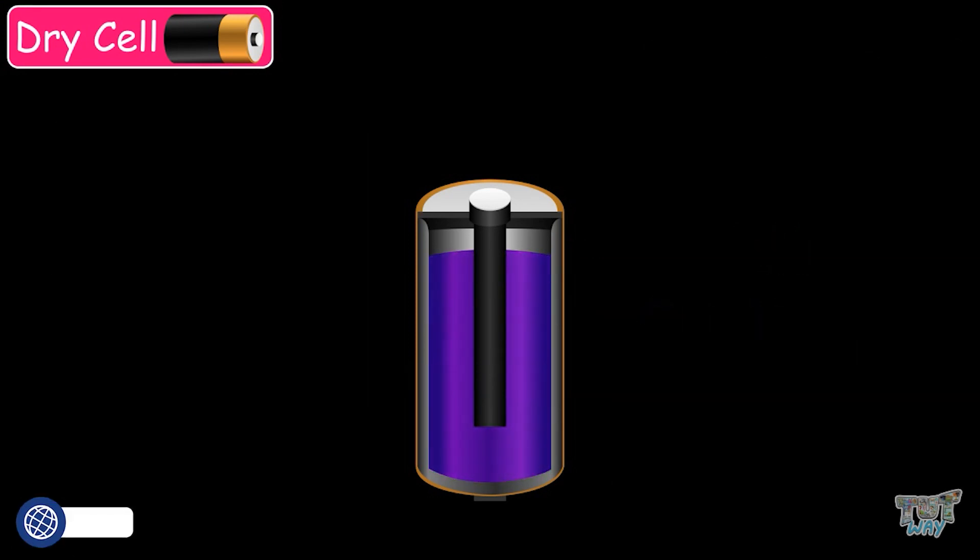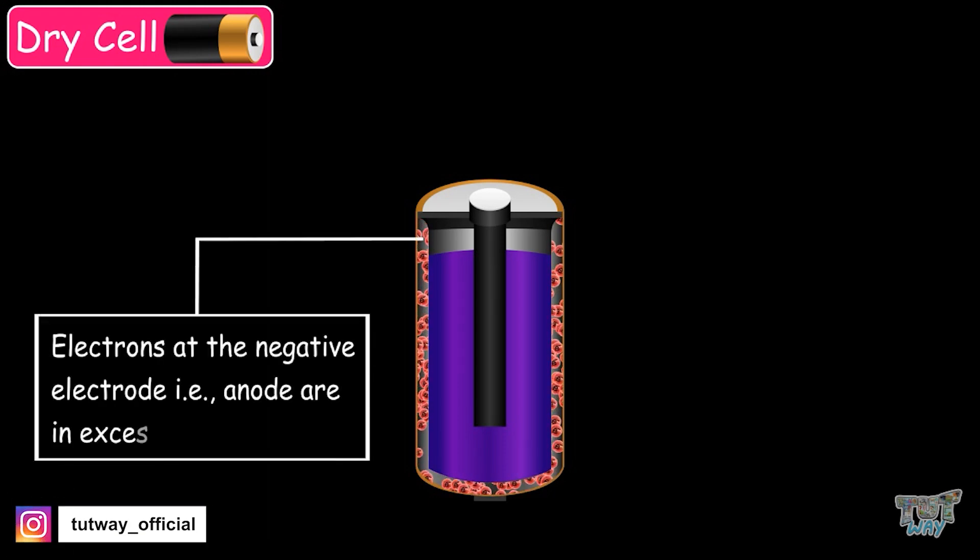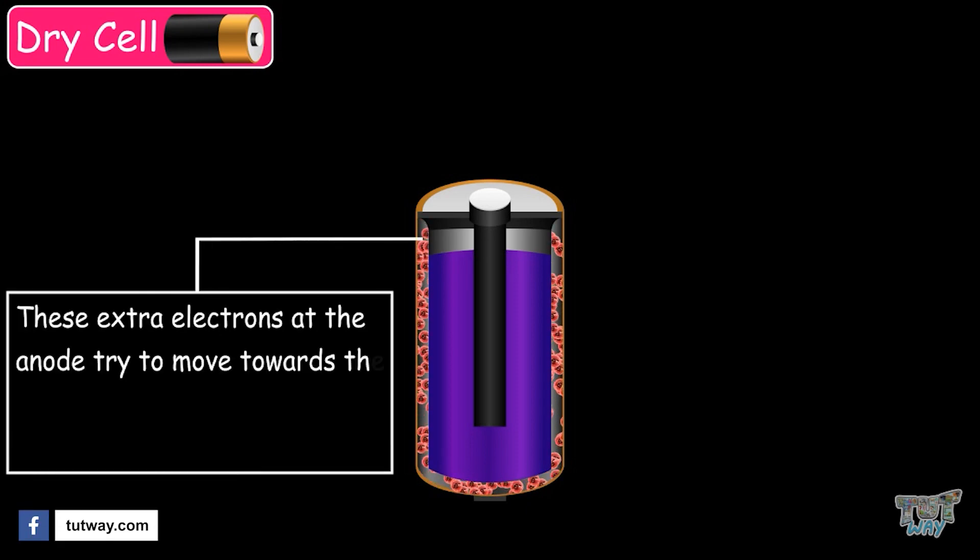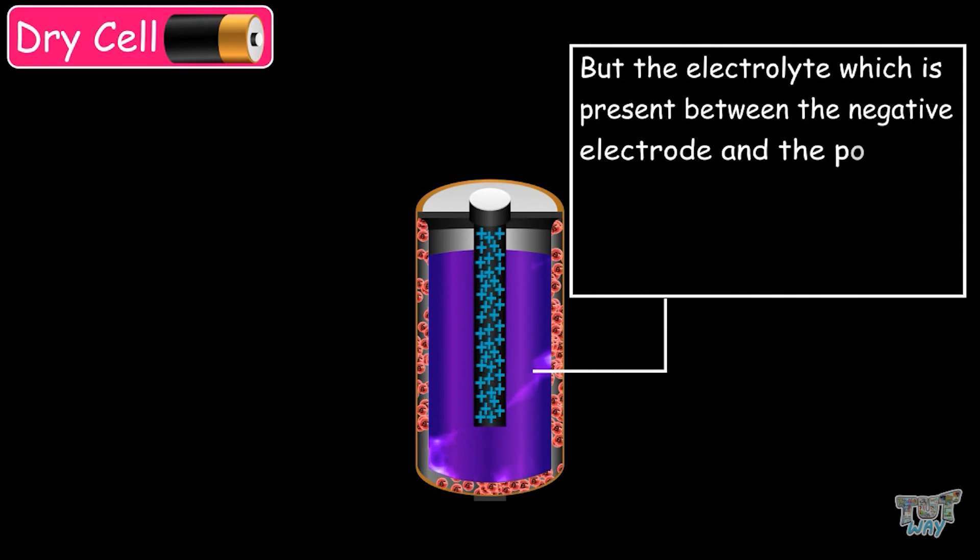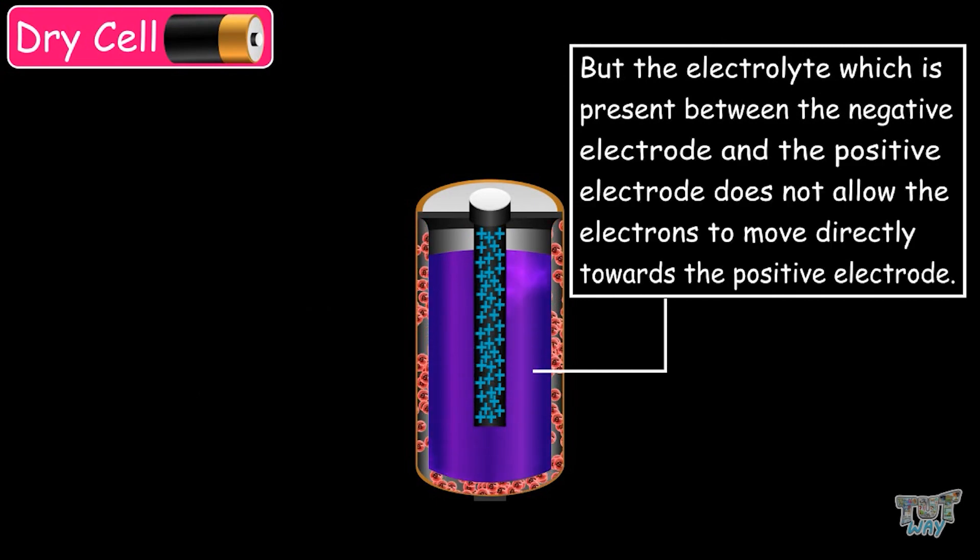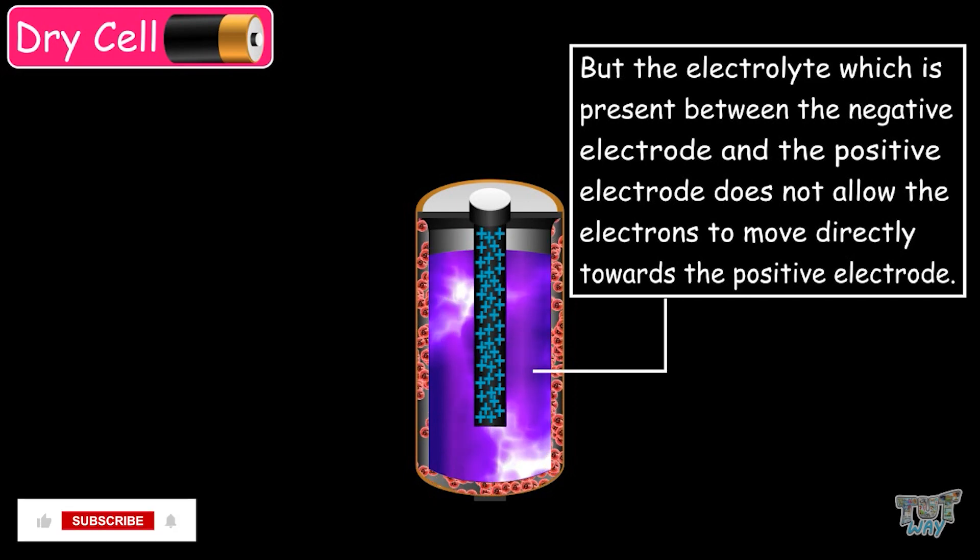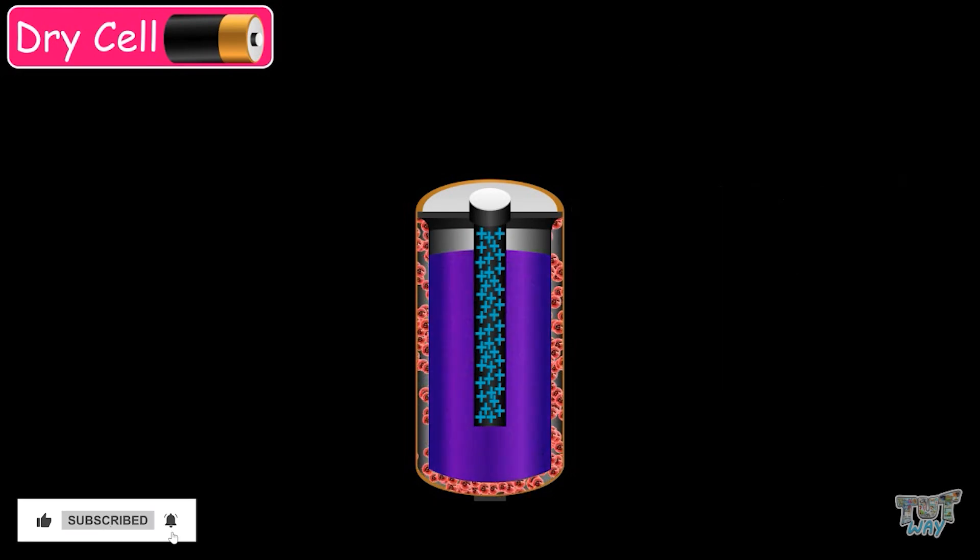Now, let's see what happens inside of the cell. In the case of a dry cell, electrons are in excess in the negative electrode, that is, the anode. And these extra electrons in the anode try to move towards the cathode, which is the positively charged electrode. But the electrolyte, which is present between the two electrodes, does not allow the electrons to move directly towards the positive electrode.